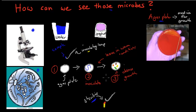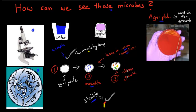Once you've inoculated the agar plate — meaning you've put your water or yogurt sample onto it — you seal it, put it in a warm area, and leave it standing for a while. A couple of days later, you come back and observe what happened. If there's lots of growth, that means the original sample had lots of pathogens in it. That's the way we can make all those microbes visible.